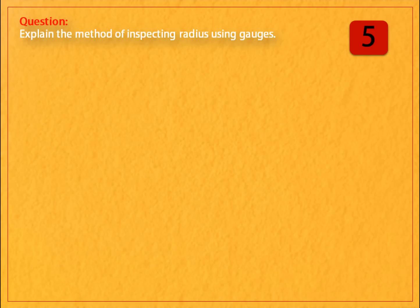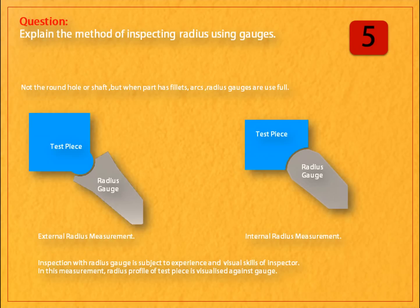Question: explain the method of inspecting radius using gauges. Answer: not the round hole or shaft, but when a part has fillets or arcs, radius gauges are useful. Inspection with a radius gauge is subject to the experience and visual skills of the inspector. In this measurement, the radius profile of the test piece is visualized against the gauge.